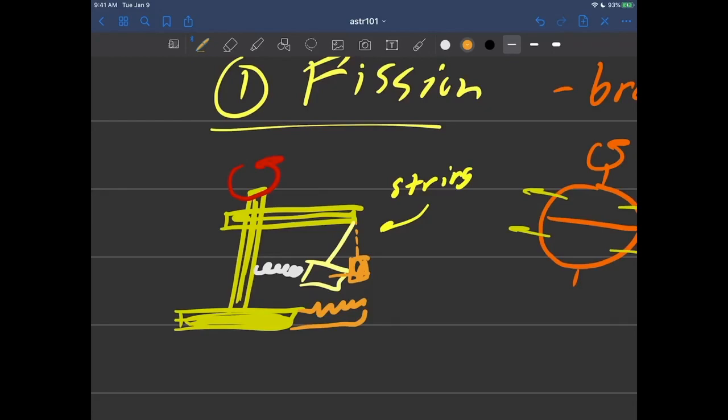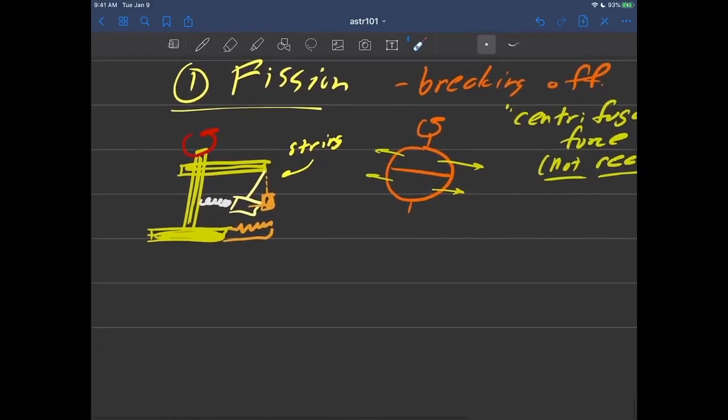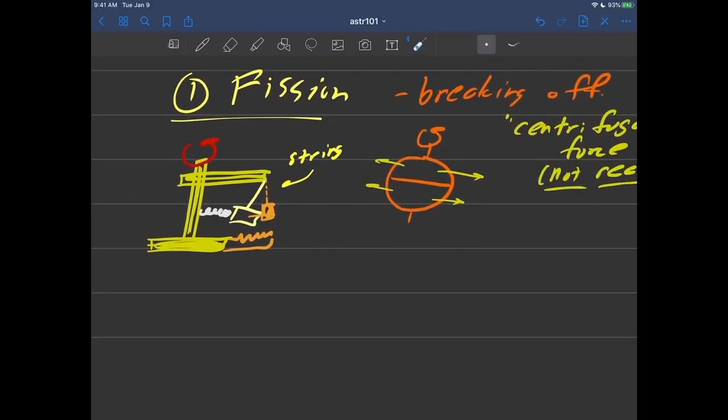So I hope you saw that as the device started to spin, it moved outwards. That's centrifugal force taking over. That's the fission theory—that maybe early in the Earth's formation, it was spinning so fast that this outward force got to be so strong that it actually broke a piece of the Earth off. And that piece started to fall out into the solar system and then maybe somehow got gravitationally captured and started to be our moon. That's the fission theory.